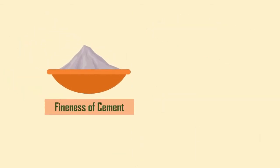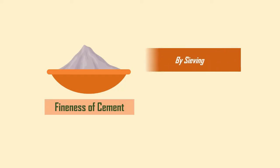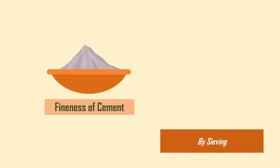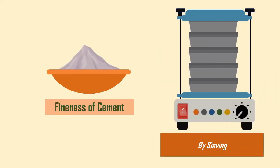The fineness of cement is measured in two ways: by sieving and by determining a specific surface using an air permeability apparatus. In this video, we'll look at the fineness of cement using sieve analysis.